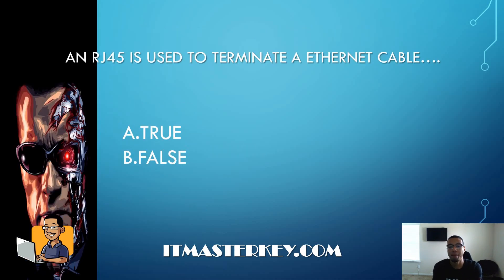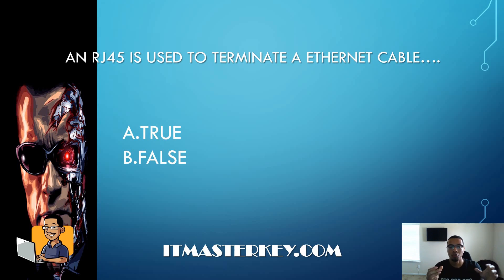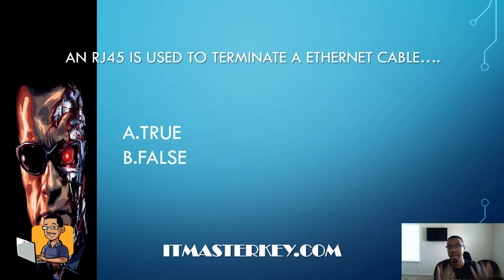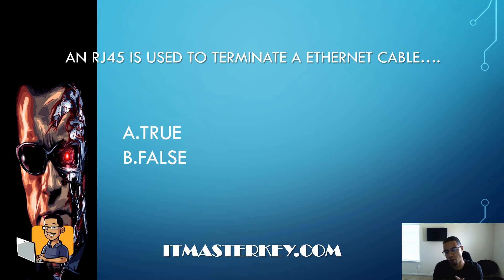An RJ45 is used to terminate an Ethernet cable — true or false? Terminate is just a fancy word that means that's what's used to end the cable and make it functional — a little connector you put on the end of the cable so it can plug into whatever you need. This statement is true.